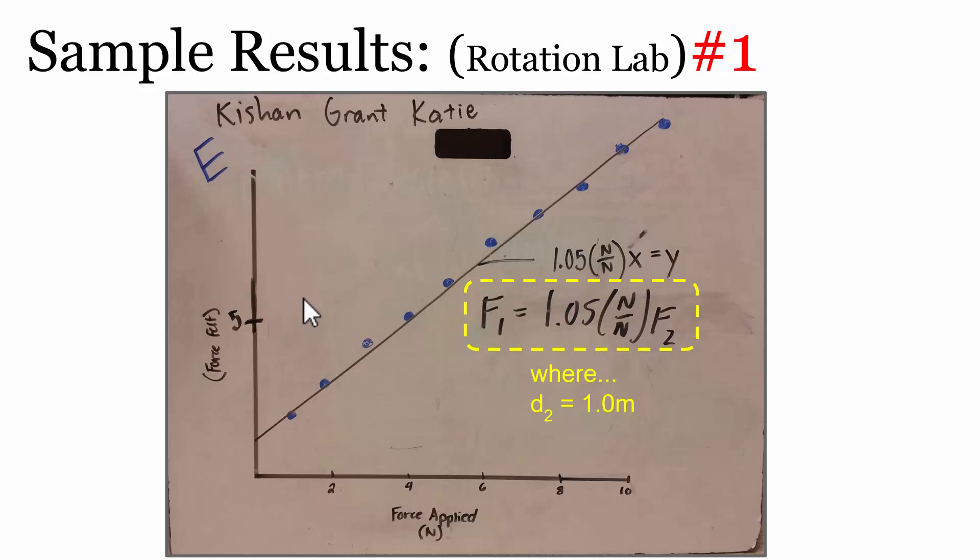Here's a sample whiteboard from one group. They chose D2, the location or distance from the pivot point where they applied their different forces, to be 1 meter away, so it was the same distance away from the point of rotation as force 1. They found a proportional relationship and got that force 1 was basically about equal to force 2 at the same distance. Their slope was 1.05 with units of newtons divided by newtons, so force 1 was about the same as force 2.